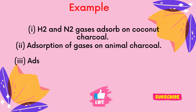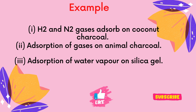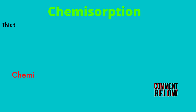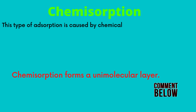Here I have shown adsorbate adsorbed onto the surface by physisorption. Typical examples of physisorption include hydrogen and nitrogen gases adsorbed on coconut charcoal, adsorption of gases on animal charcoal, and adsorption of water vapor on silica surface. Then comes chemical adsorption.